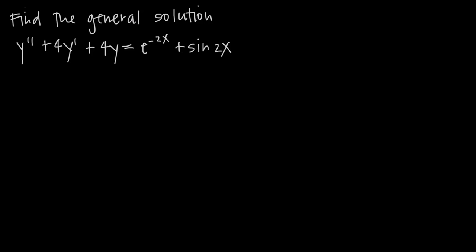In this video, we're talking about how to find the general solution to a second-order non-homogeneous differential equation. In this particular problem, we've been given the equation y double prime, or the second derivative of y, plus 4y prime plus 4y is equal to e to the negative 2x plus sine of 2x. This is a non-homogeneous differential equation because the right-hand side is non-zero.